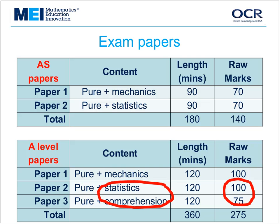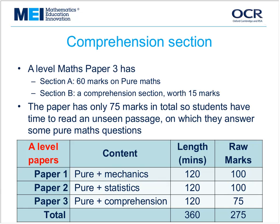There's an insert — a passage to read on which students answer questions. Some of the questions are based on the passage. There are two sections in Paper 3: Section A is the normal section, 60 marks with pure maths questions. Section B is the comprehension section, worth 15 marks, with a separate insert passage a couple of pages long which students read and then answer questions on. We've found from current experience that time is not a problem — students have plenty of time for the reading and answering the questions.